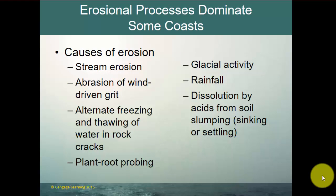The causes of erosion include streams flowing in from mountains, abrasion from wind, alternate freezing and thawing of water in rock cracks, plant roots weathering rock, glacial activity, rainfall, and dissolution of acids from soil. There are many ways that rock can be broken down by weathering and then eroded, a topic covered in more detail in an earth science class.